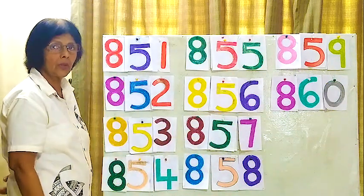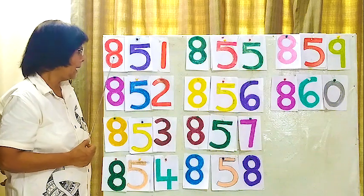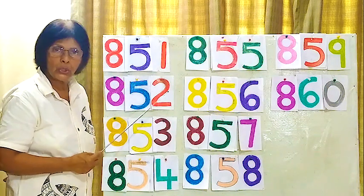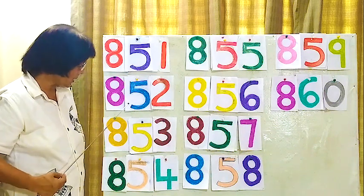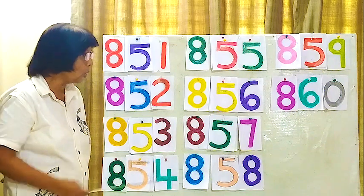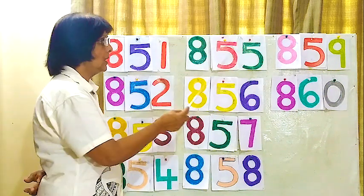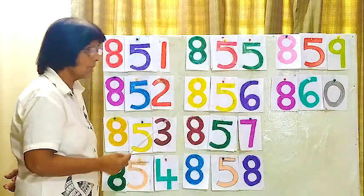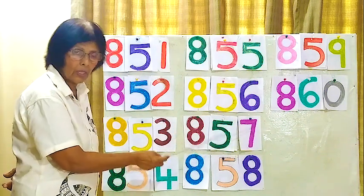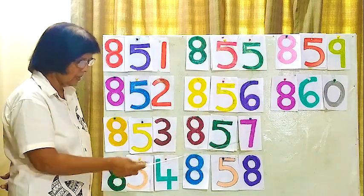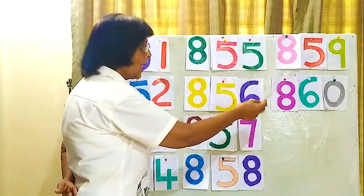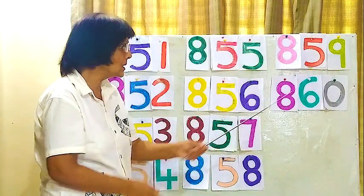Now we will read from the beginning. 851, 852, 853, 853, 854. 855, 856. 857, 857, 858. 858, 859. 860. Okay?